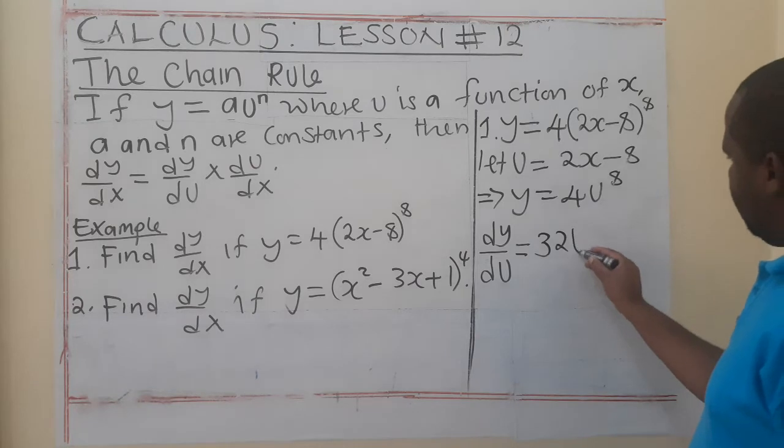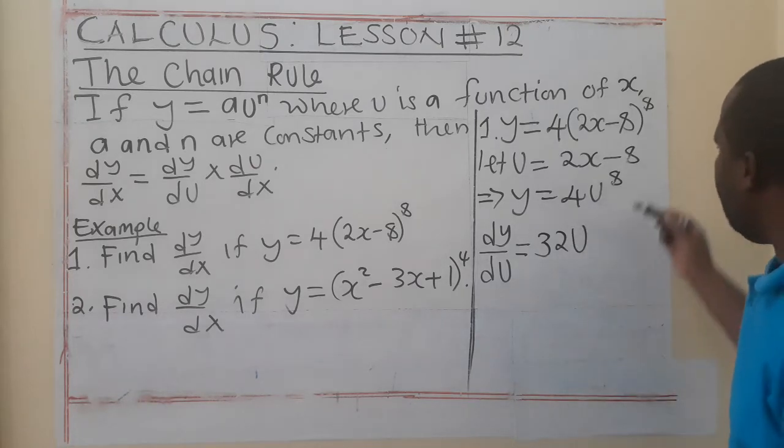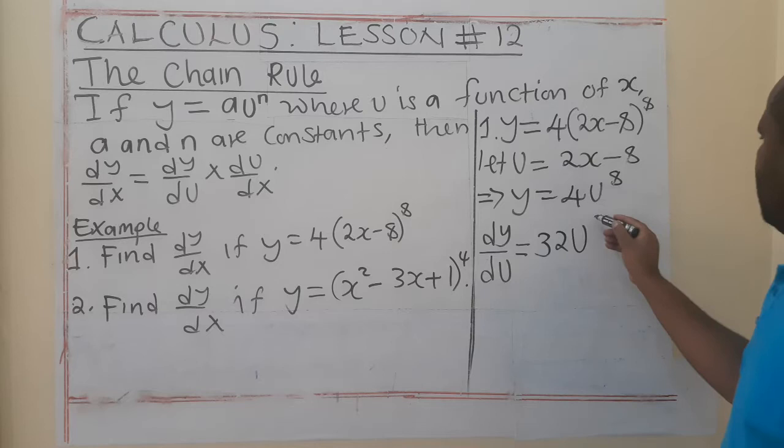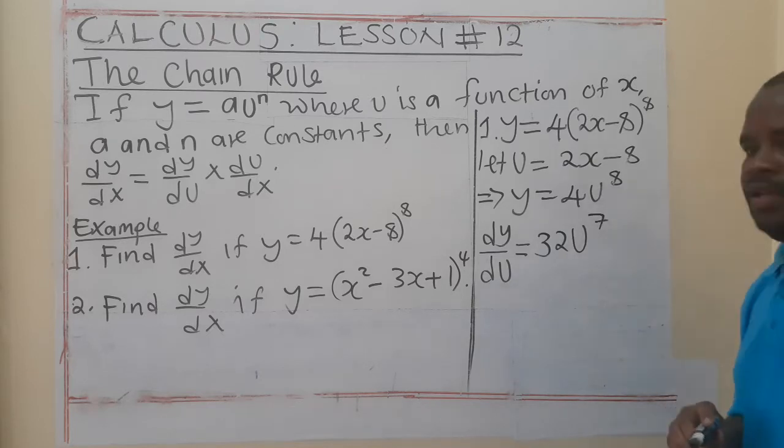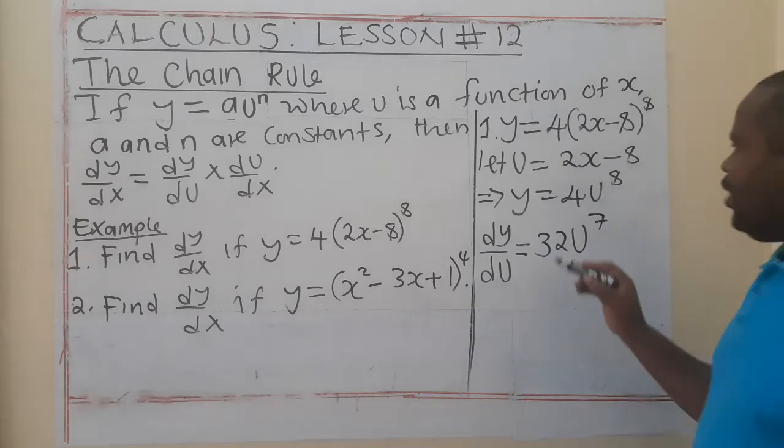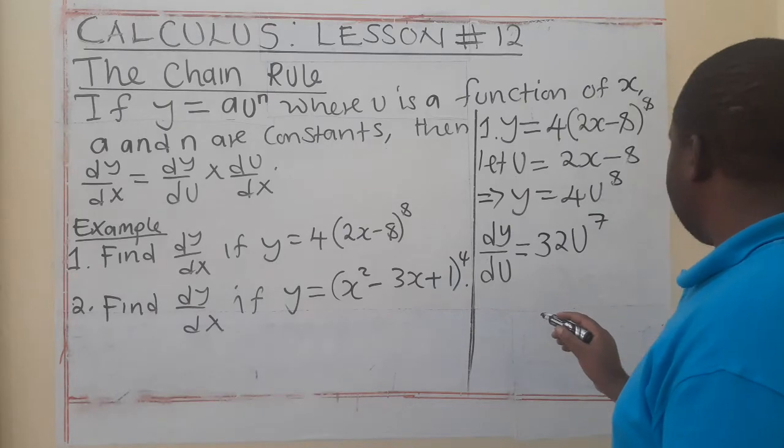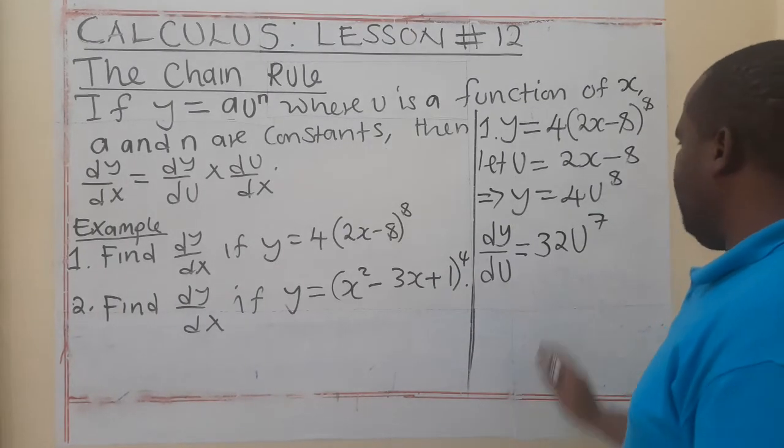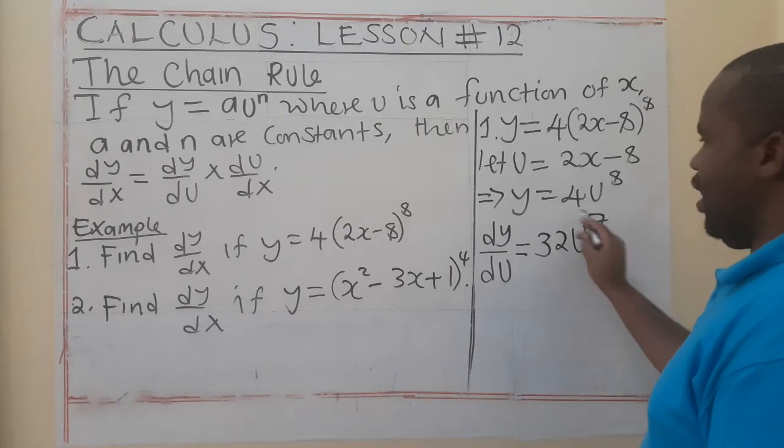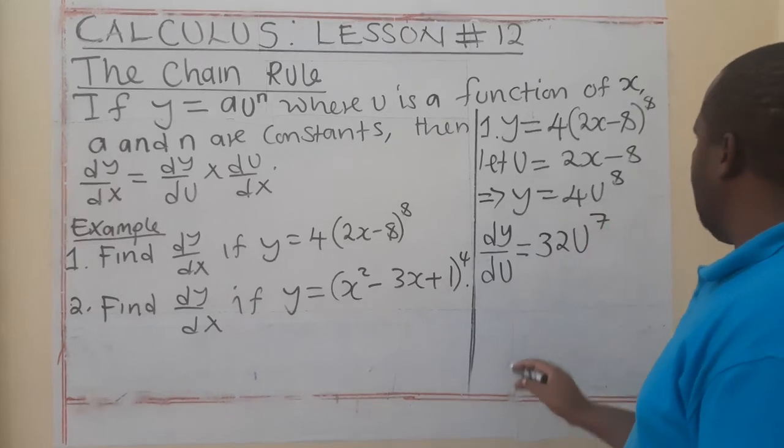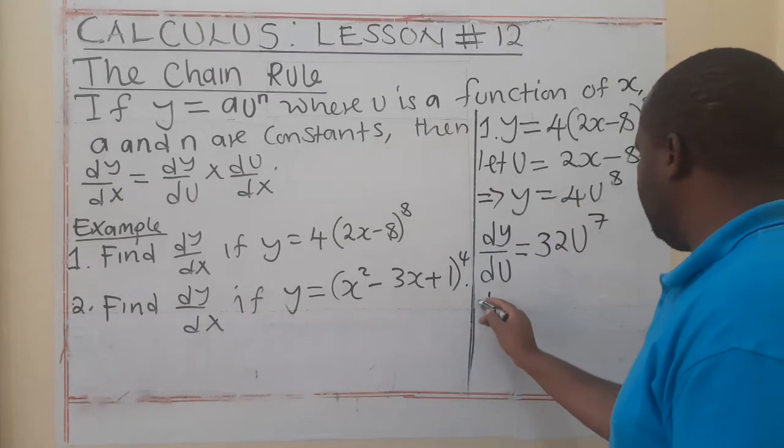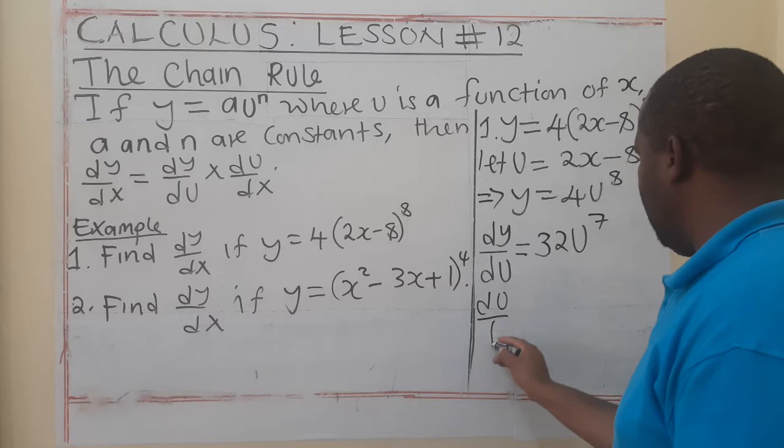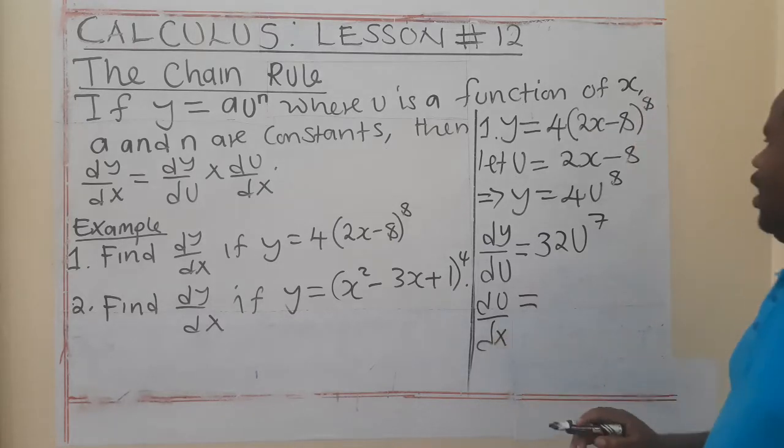Then, you have got u here. Then, from the power here, you reduce 1. So, here, you are going to have 7. Then, you go and deal with it. So, if you want, you can even substitute here in advance. Or, we can go straight and get du/dx. There is no problem. This is what we are going to have.